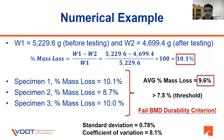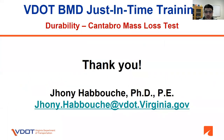It is also recommended to calculate the standard deviation of the percent mass loss, which in this case is 0.78 percent, as well as the coefficient of variation, which is equal to 8.1 percent, to monitor the variability of the test results. In this segment, we presented information related to the Cantabro mass loss test performed according to AASHTO TP-108. If you have questions, please add them to the chat box, ask them during the Q&A session, or email them to johnny.haboush@vdot.virginia.gov. Thank you.